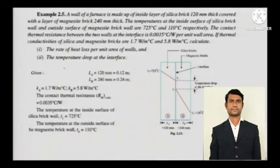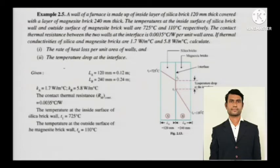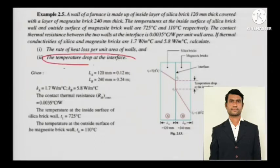The next numerical: a wall of a furnace is made up of an inside layer of silica brick 120 mm thick, covered with a layer of magnesite brick 240 mm thick. The temperature of the inside surface of the silica brick wall is 725 degrees Celsius and the outside surface of the magnesite brick wall is 110 degrees Celsius. The contact thermal resistance between the two walls at the interface is 0.0035 degrees Celsius per watt per unit wall area. The thermal conductivities of silica and magnesite bricks are 1.7 and 5.8 watts per meter degree Celsius respectively. Calculate the rate of heat loss per unit area of the walls and the temperature drop at the interface.